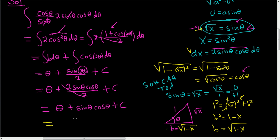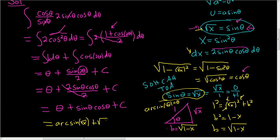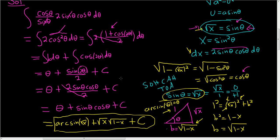Now we're ready to write our final answer. Since sine of theta equals the square root of x, the arcsine takes the square root of x and gives back theta, so theta equals arcsin(√x). Sine theta is √x, and cosine is adjacent over hypotenuse — the adjacent is √(1−x) and the hypotenuse is 1. So the final answer is arcsin(√x) plus √x · √(1−x) plus c.